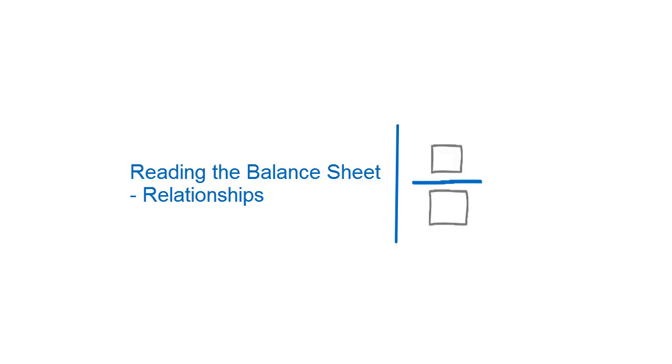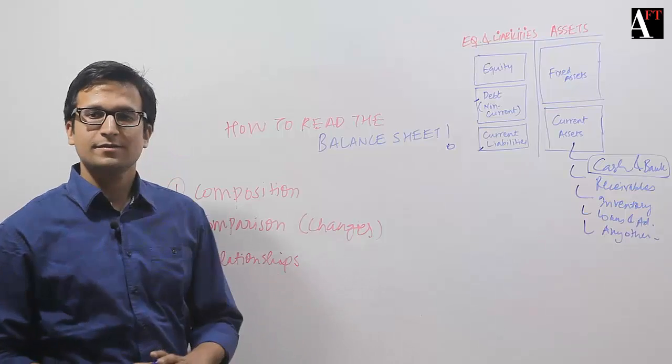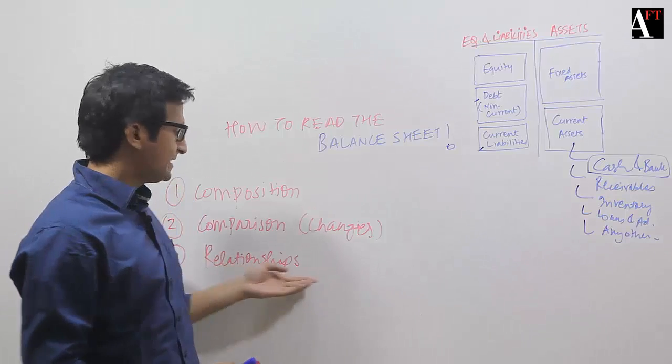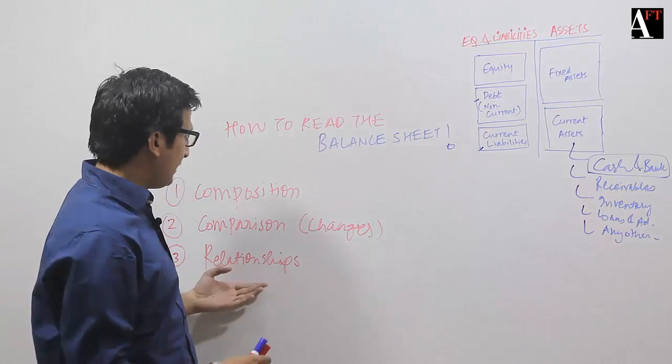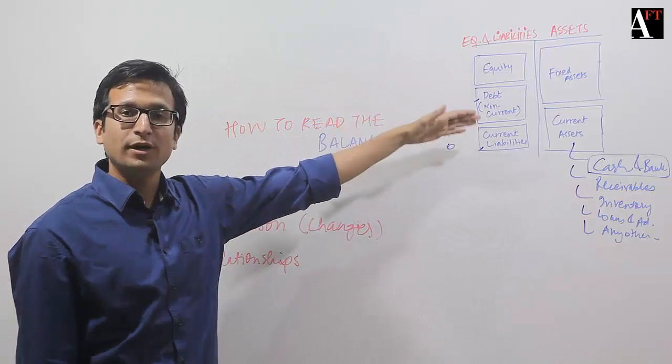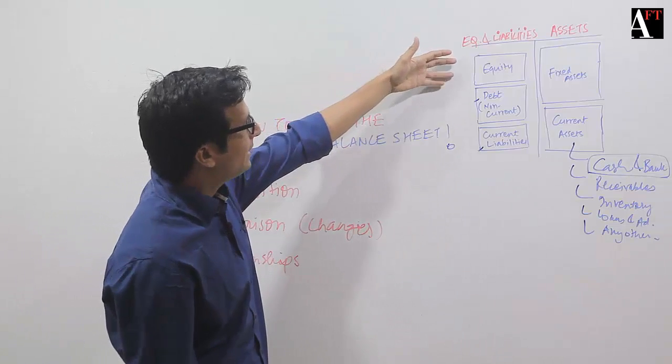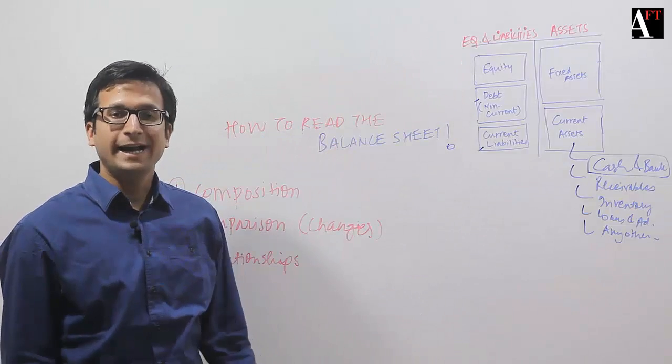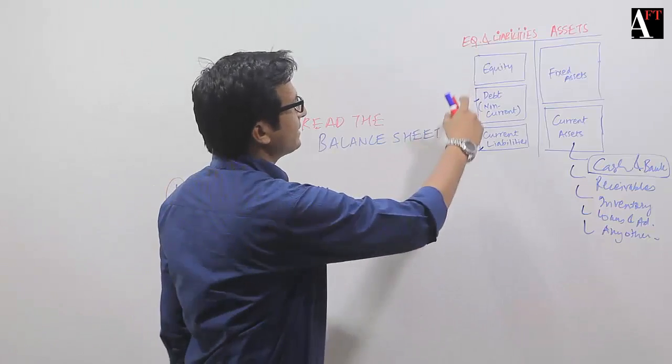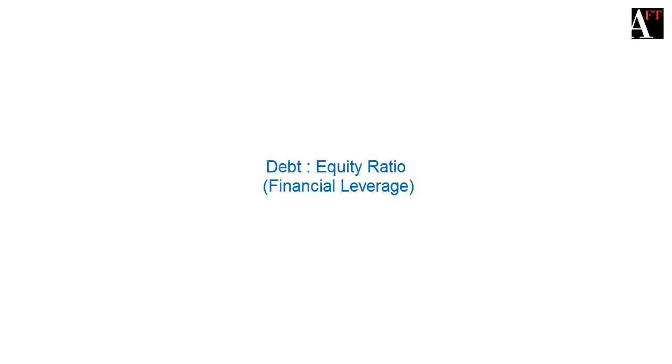Let's understand the third important part here, which is relationships. When I say relationships, I'm trying to find out the relationships between different components of the balance sheet. I'm trying to compare the equity with debt, or find out the relationship between equity and debt, that would give me a ratio.